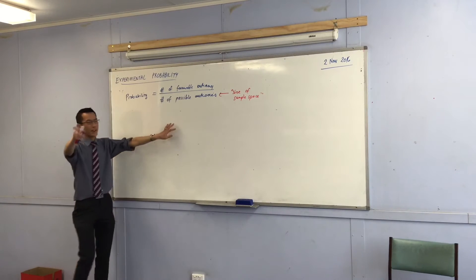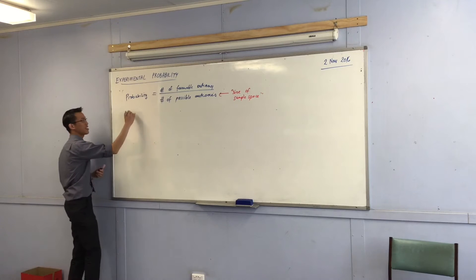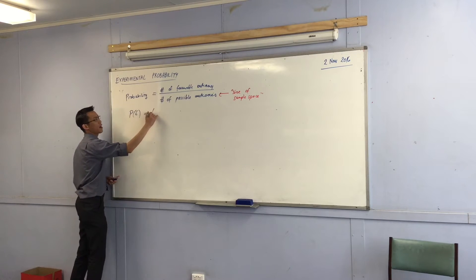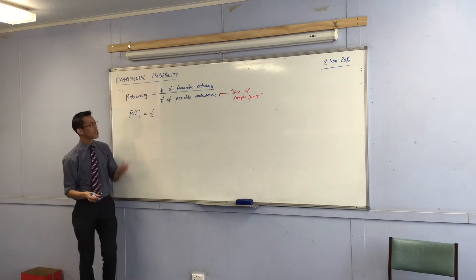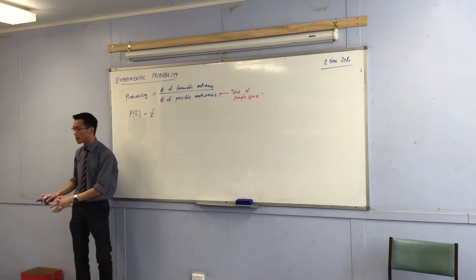Right? So that's why, as we had pointed out before, the probability of a six, rolling a six on a die, is one out of six, because there's only a single six on there, and there are six possible things. So you remember this.